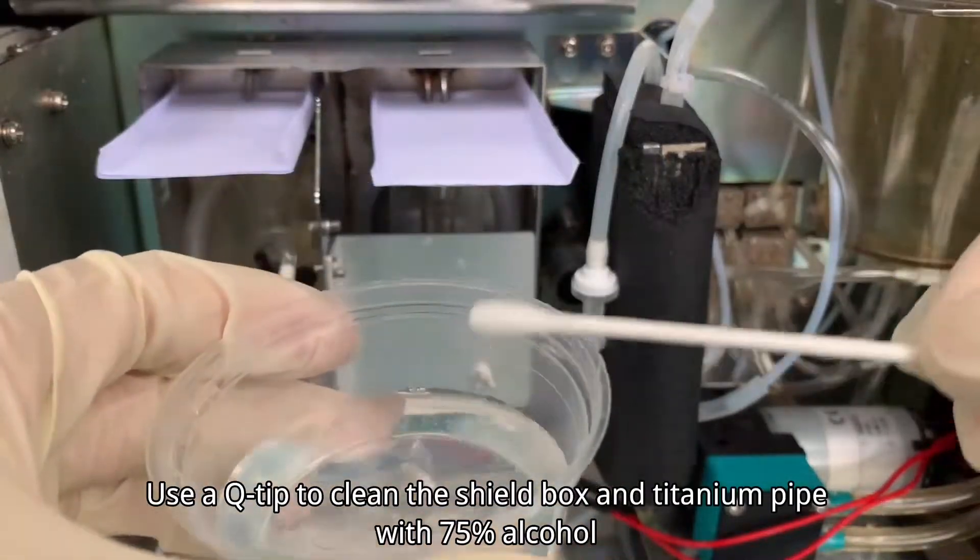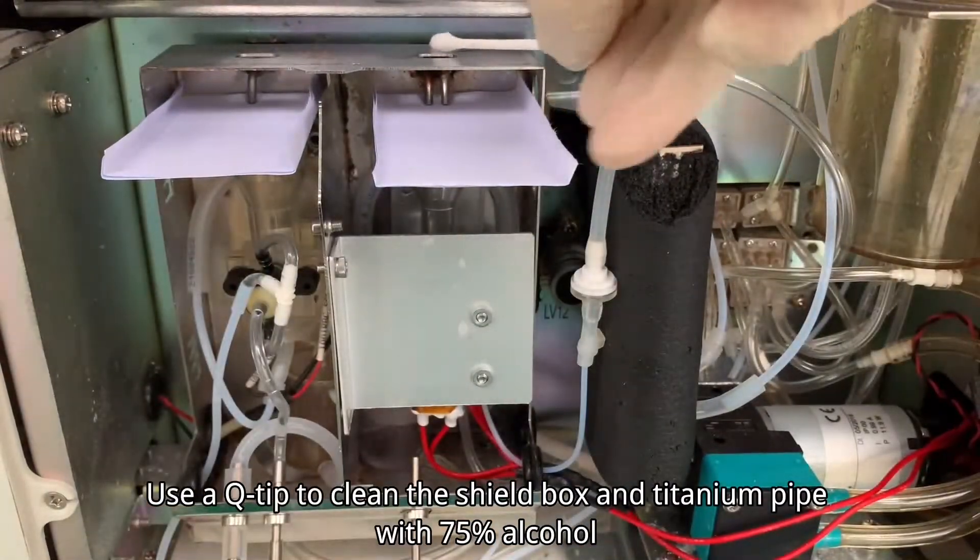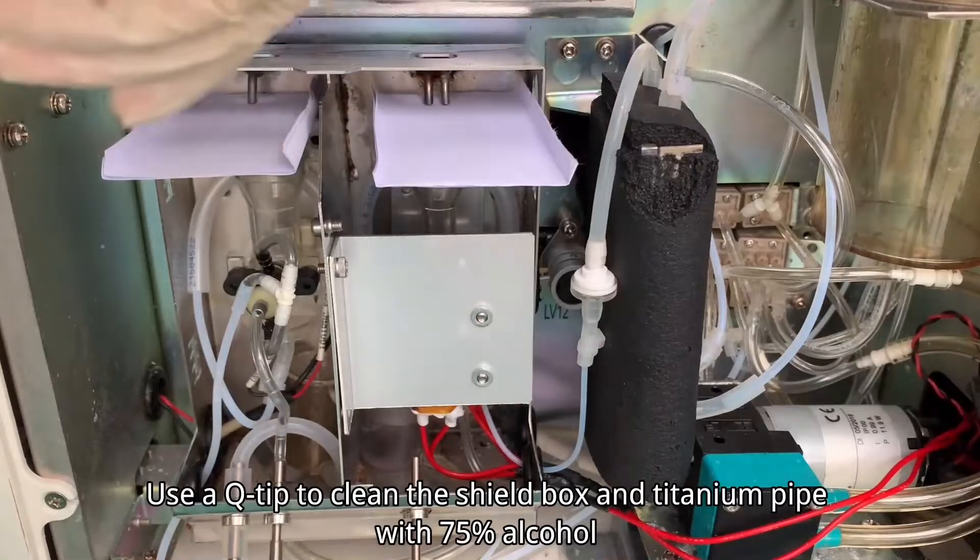Use a q-tip to clean the shield box and titanium pipe with 75% alcohol.